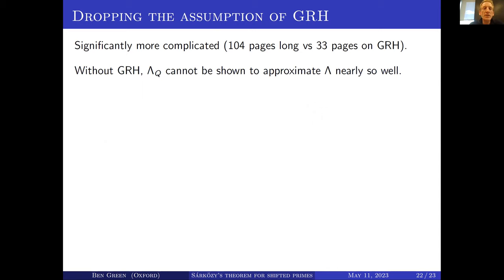Why is it so much more complicated? Basically without GRH, this Heath-Brown approximant λ_Q cannot be shown to approximate the von Mangoldt function nearly so well. There might be zeros of the zeta function or other Dirichlet L-functions that are skewing the behavior of the von Mangoldt function, and λ_Q can't see any of those. So what one needs to do is to introduce a more complicated approximant that basically sees all of those zeros.